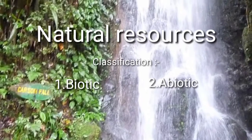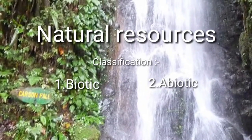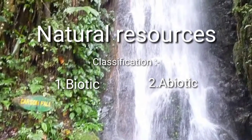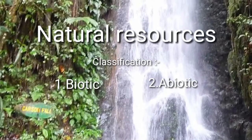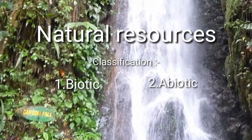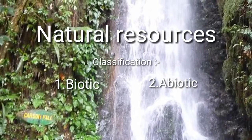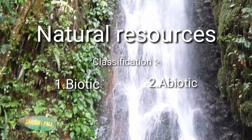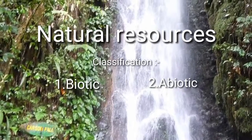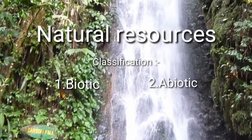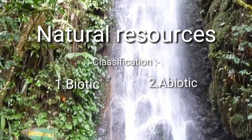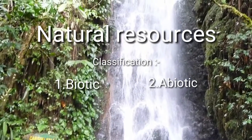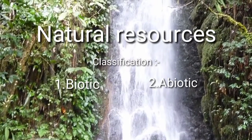The second one is abiotic. Abiotic resources are those that come from non-living, non-organic material. Examples of abiotic resources include land, fresh water, air, rare earth metals and heavy metals including ores such as gold, iron, copper, silver, etc.